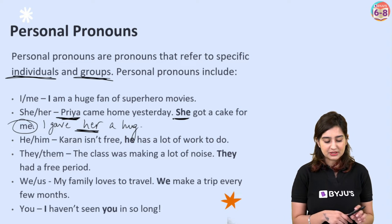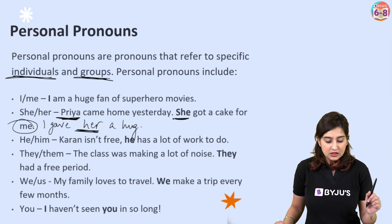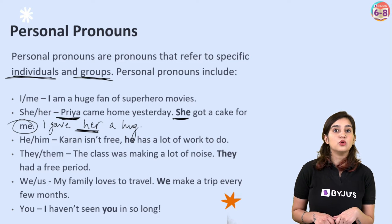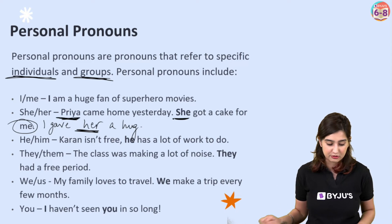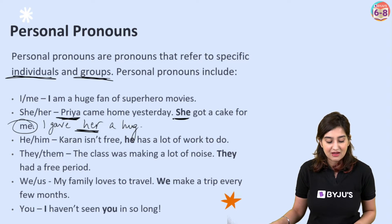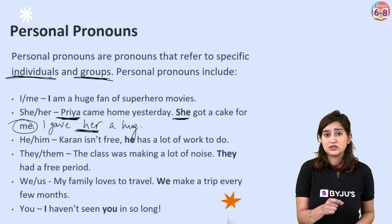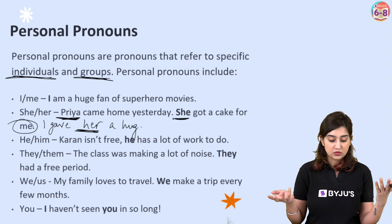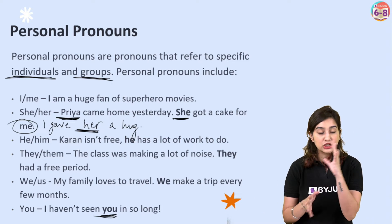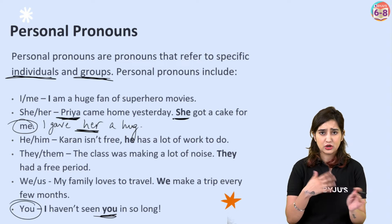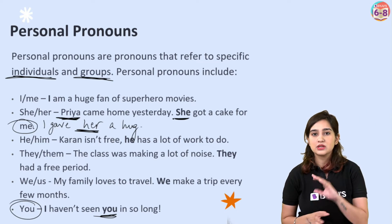We and us: 'My family loves to travel. We make a trip every few months. Sometimes our relatives come with us.' And then you: 'I haven't seen you in so long.' Here 'you' is used as the object. You can also use it as a subject: 'You look very nice today.' The interesting and easy thing about 'you' is that its subject, object, singular, and plural forms are all the same — 'you' stays 'you' regardless.